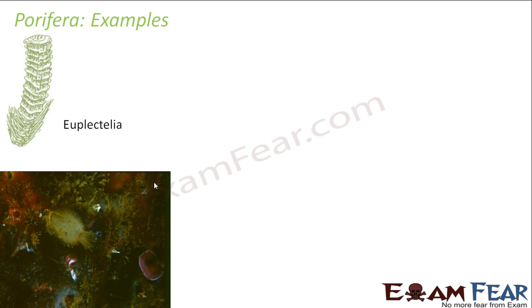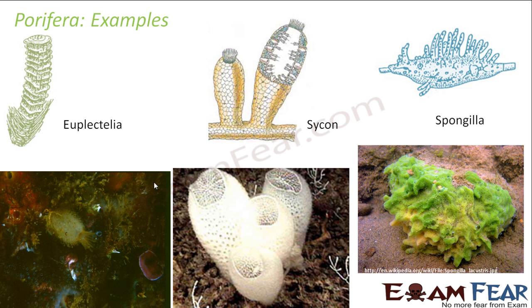Some examples of Porifera would be Euplectella, Sycon sponges. In each of them you have small pores throughout their body. Sycon has an opening at the top, which is a bigger opening-like structure known as the osculum. We will talk about the structure of Porifera in detail.